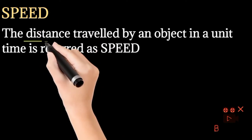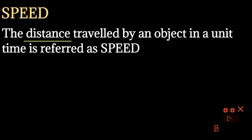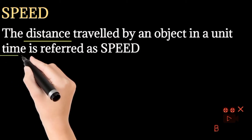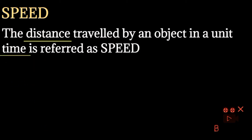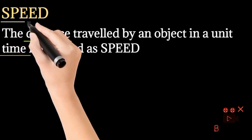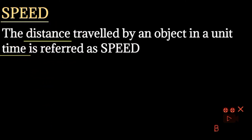If an object travels a distance in a given time, then that is called the speed of that object. So we can determine what is that object's speed.